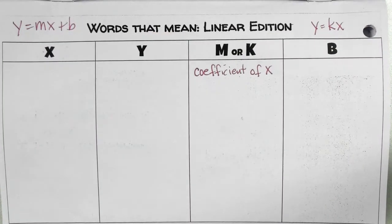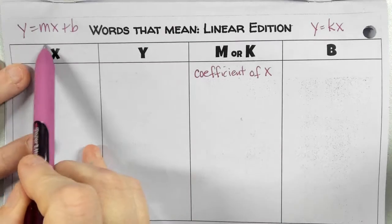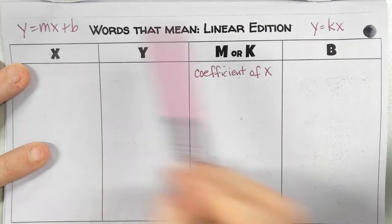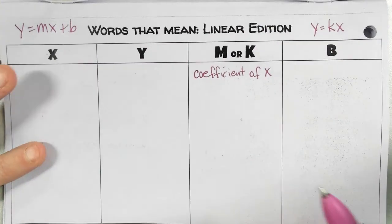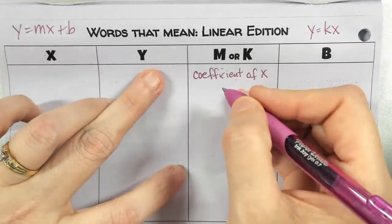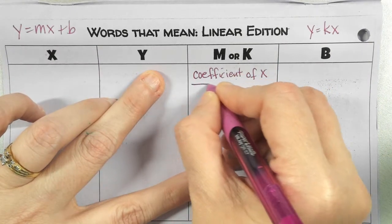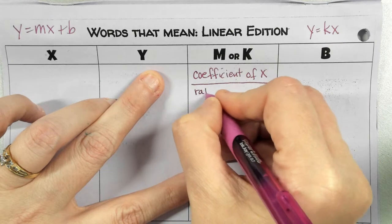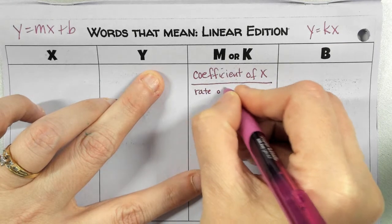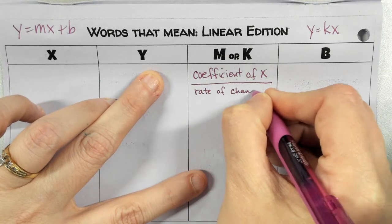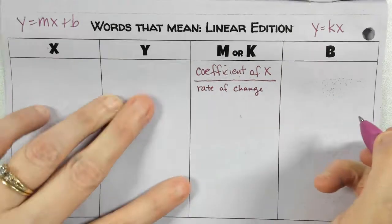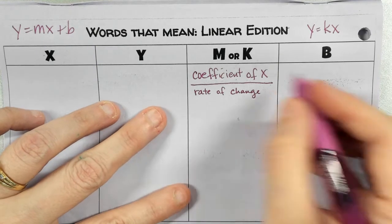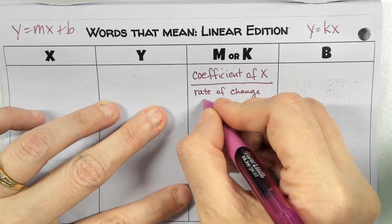Again, we've talked about how we might use other letters, but in general, in these two forms we're looking at the number in front of X. We've also called it rate of change, which is what we use in a table.